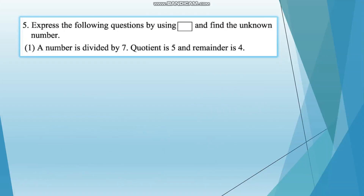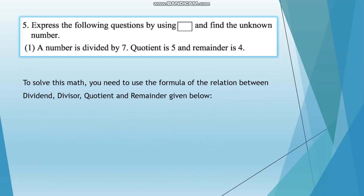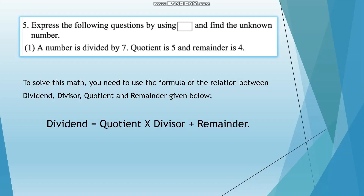Moving on to question number 5: express the following questions by using a blank box and find the unknown number. A number is divided by 7; the quotient is 5 and the remainder is 4. To solve this, you need to use the formula for the relationship between dividend, divisor, quotient, and remainder: dividend equals quotient multiplied by divisor plus remainder. We have already discussed this formula in class.